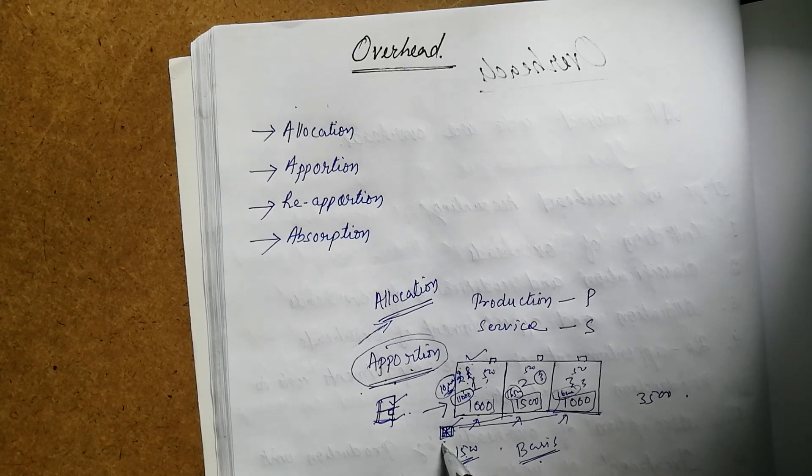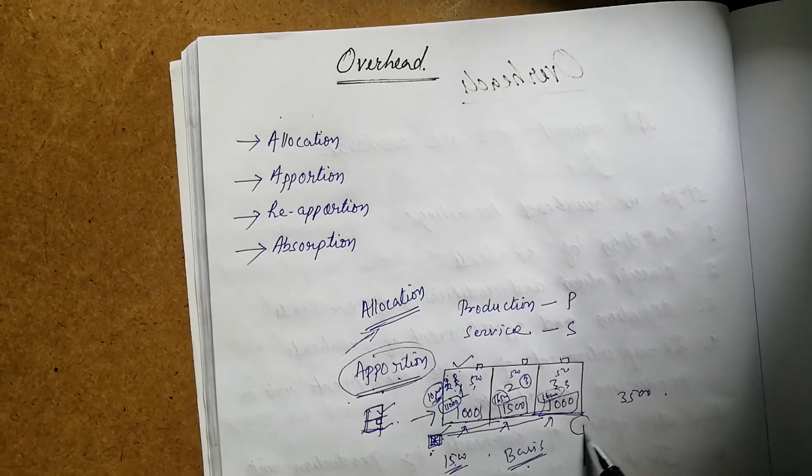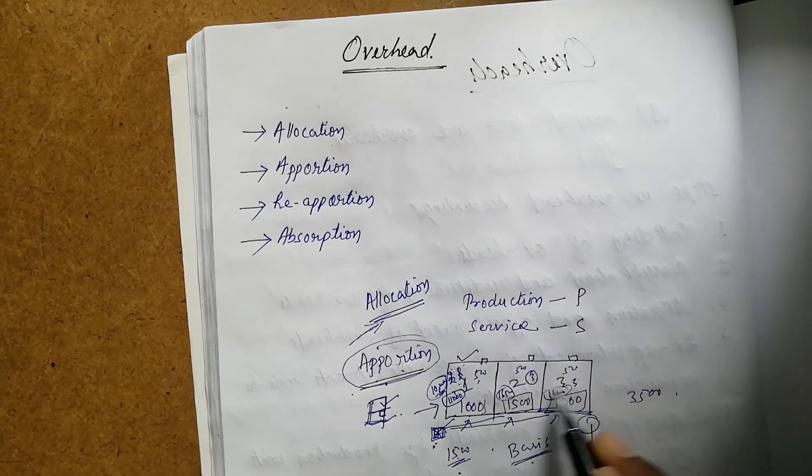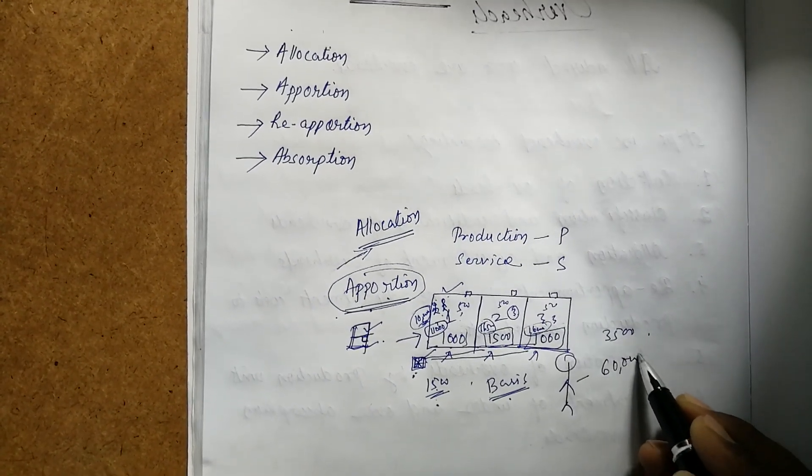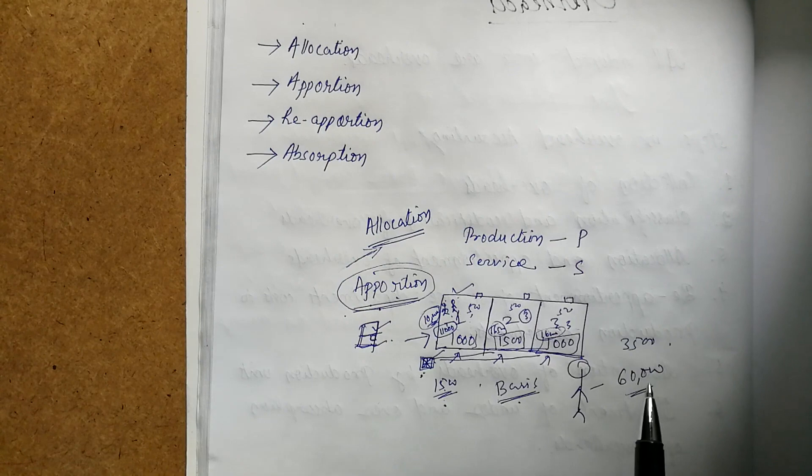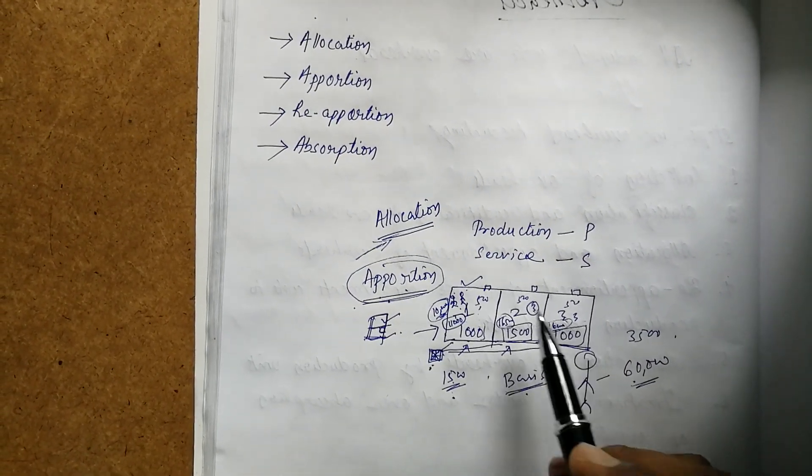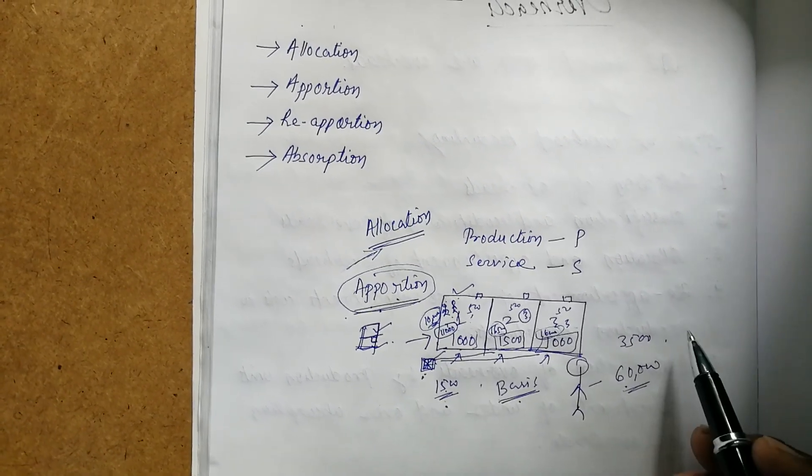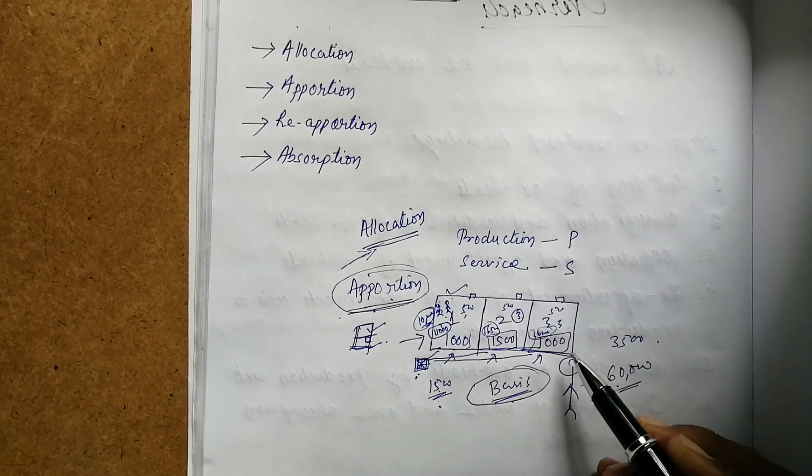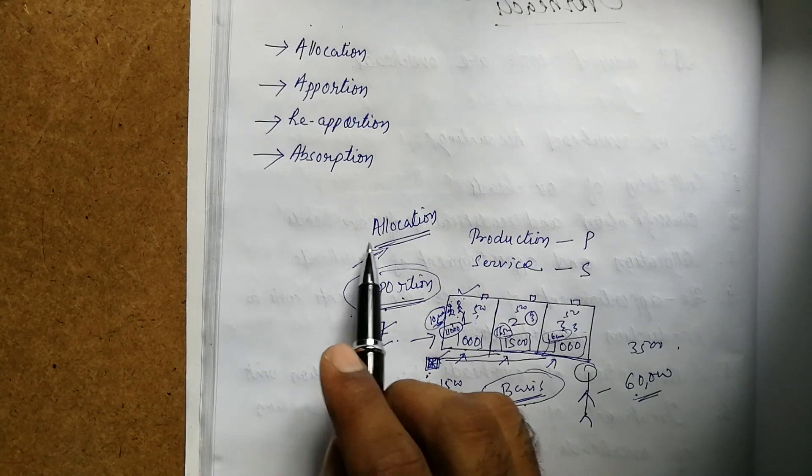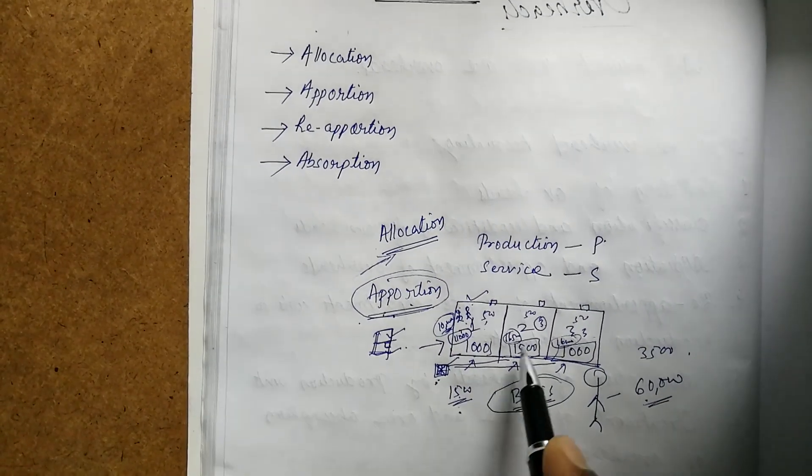Suppose these three departments together have one manager appointed who oversees all three. We're paying him 6,000 salary. This 6,000 we need to distribute department-wise. But how? So there we need a basis. That basis we'll see in the next class. For now, just understand the meaning: allocation means direct expenses that go to their account, apportion means common expenses that need to be distributed.